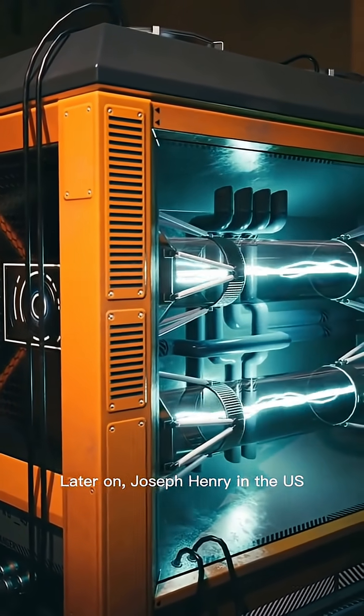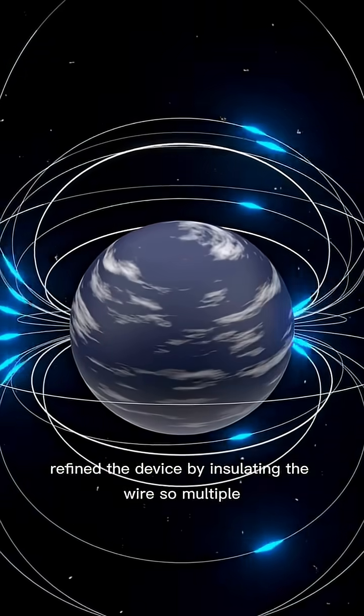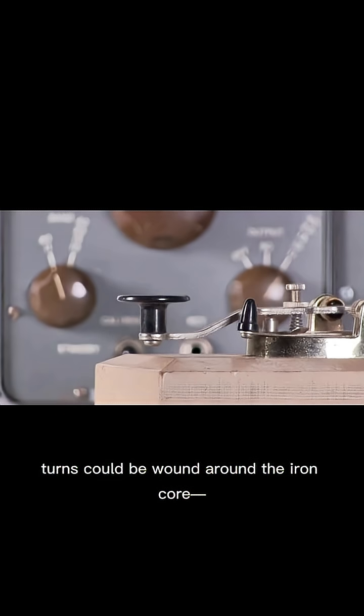Later on, Joseph Henry in the U.S. refined the device by insulating the wire so multiple turns could be wound around the iron core.